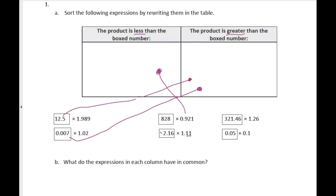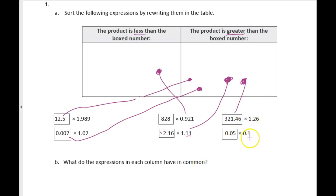This one is going to get bigger. This one too, because it's one and twenty-six hundredths — twenty-six hundredths bigger than one. This last one is going to get smaller because we're only multiplying by one tenth, so it's going to be one tenth of what it was.